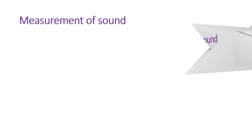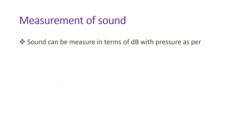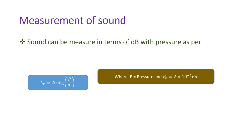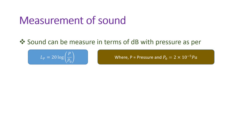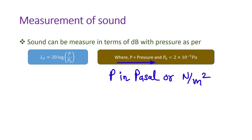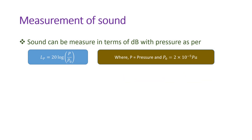For measurement of sound, sound can be measured in terms of dB with respect to pressure. The formula is: pressure in dB = 20 log(P / P0), where P is pressure in Pascals or Newton per meter square, and P0 is the reference pressure, which is 2 × 10⁻⁵ Newton per meter square.